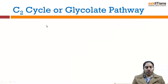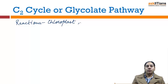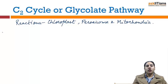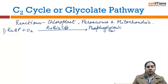The reactions that take place in the glycolate pathway or photorespiration take place in three organelles: the first organelle is the chloroplast, then the peroxisome, and then the mitochondria. The first reaction is the one in which RuBP, in the presence of high concentration of oxygen by the action of the enzyme rubisco, is converted into phosphoglyceric acid and phosphoglycolic acid. This is done in the chloroplast.